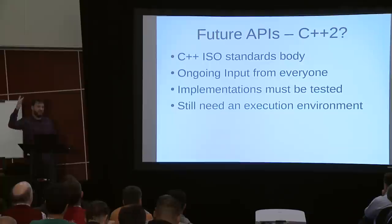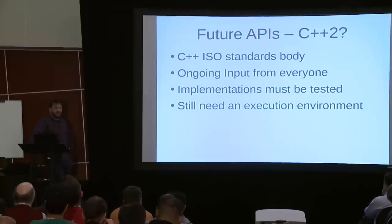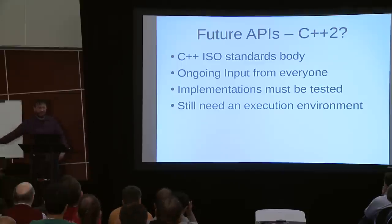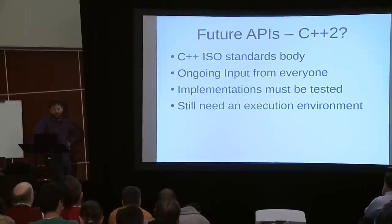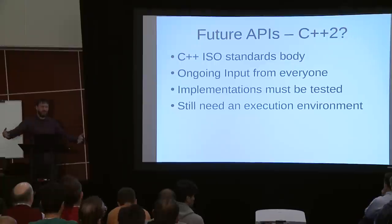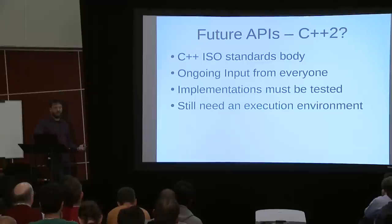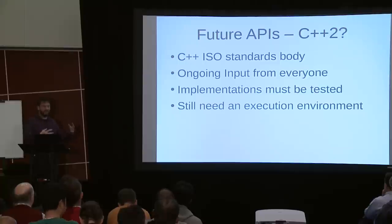At a higher level, there's a lot of future API work in C++ standardization. The C++ standards body — everyone says they're contributing, so I can't tell who's actually winning. SYCL guys, CUDA people, OpenACC, OpenMP — everyone's talking to the standards body, and whoever you talk to says their implementation will be accepted, but nobody actually knows yet. It's going to be C++20 at this point. The standards body wants tested implementations — you can't just say it's going to work. And even if you have a high-level C++ standard, you still need some sort of execution environment underneath it.